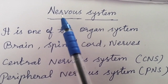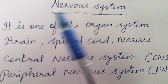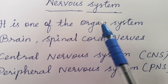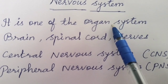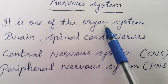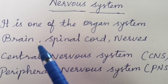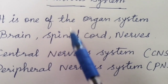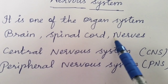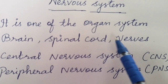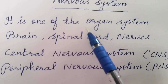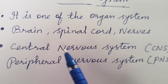Today we are going to study about the nervous system. The nervous system is one of the organ systems. An organ system is a group of organs that work together to perform a specific function. The nervous system consists of brain, spinal cord and nerves — many organs working together to perform the function of sending information to all parts of our body.